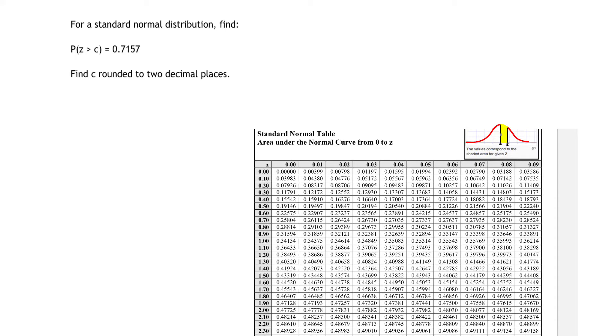For a standard normal distribution, find C, given that the probability that Z is greater than C is 0.7157.